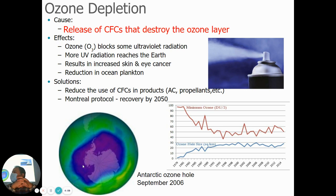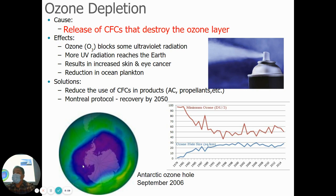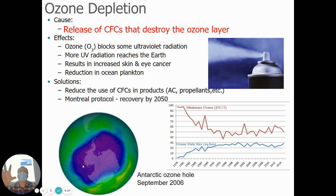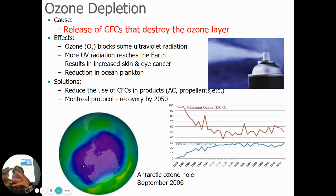They realized this was a problem and came up with an agreement called the Montreal Protocol. These countries said we're going to stop using CFCs for certain uses and try to find alternatives. Countries all came together and agreed, and since then there has been improvement — because we stopped using these chemicals, the ozone layer is starting to heal. Scientists think by 2050 or so it'll be fully recovered. This is a good example of how if countries can come together and agree to take action, they can have a positive change on environmental issues.